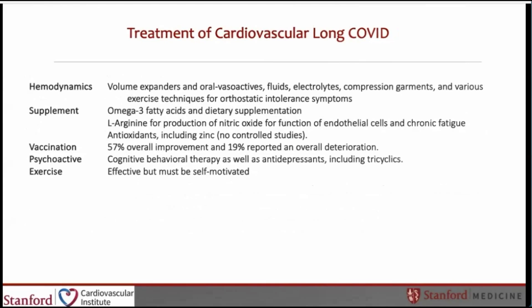How do we treat cardiovascular long COVID syndrome? In terms of hemodynamics: volume expanders, vasoactive agents, fluids, electrolytes, compression garments, and various exercise techniques for orthostatic intolerance. In terms of supplements, omega-3 fatty acids and dietary supplementation, L-arginine for production of nitric oxide, and antioxidants such as zinc were reported to be effective, but there are no direct clinical trials to demonstrate benefit.